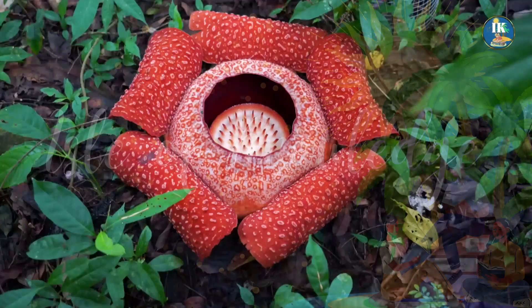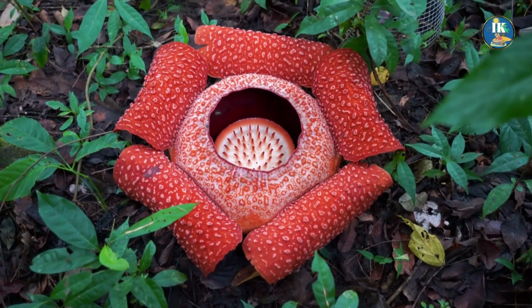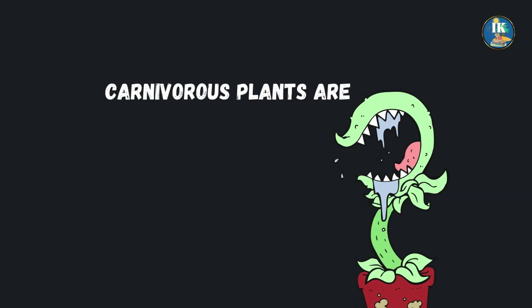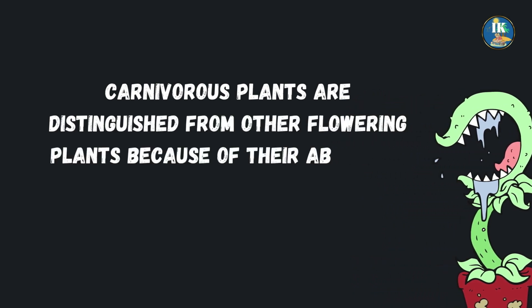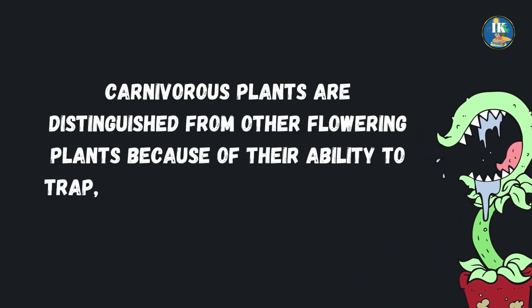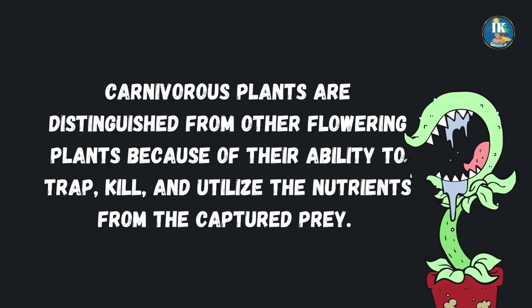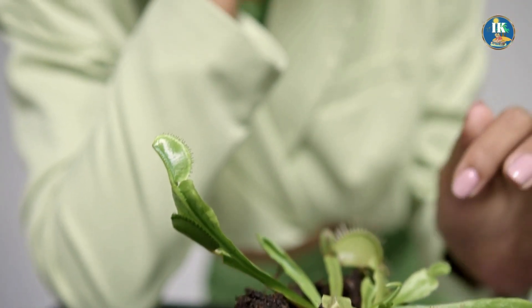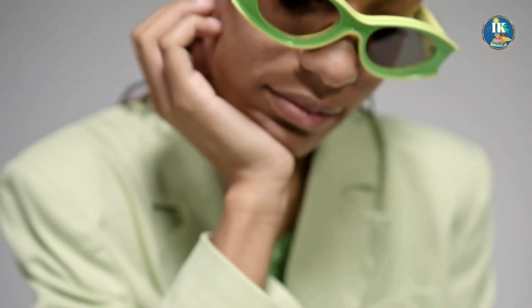Today we are going to explore the fascinating world of carnivorous plants. Carnivorous plants are distinguished from other flowering plants because of their ability to trap, kill, and utilize the nutrients from captured prey. The prey is usually attracted to the plant by specialized leaves or traps, which may function as active or passive, depending on whether movement is involved in the capture.